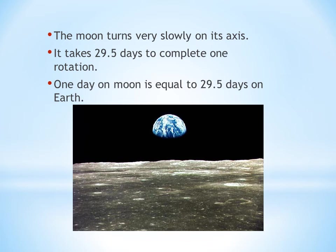The revolution of the moon — the movement around the Earth — and the rotation of the moon on its axis are almost the same: revolution is 27.3 days and rotation is 29.5 days. Roughly speaking, both are about 30 days.